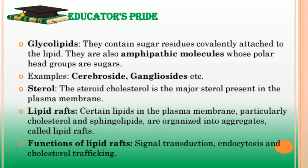Sterols are also present in plasma membranes. Cholesterol is the major sterol present in the plasma membrane of animal cells, whereas plant cells lack cholesterol but contain stigmasterol. Lipids are not distributed randomly in each leaflet of the bilayer — cholesterol and sphingolipids are organized into aggregates called lipid rafts, which are associated with functions such as signal transduction, endocytosis, and cholesterol trafficking.